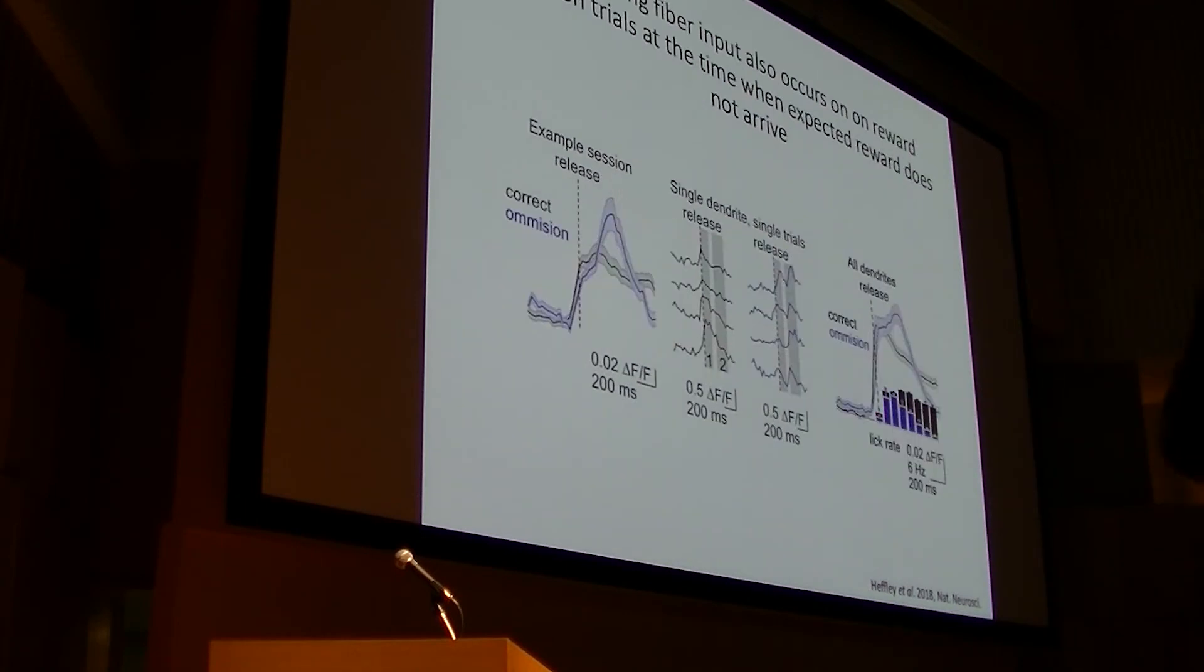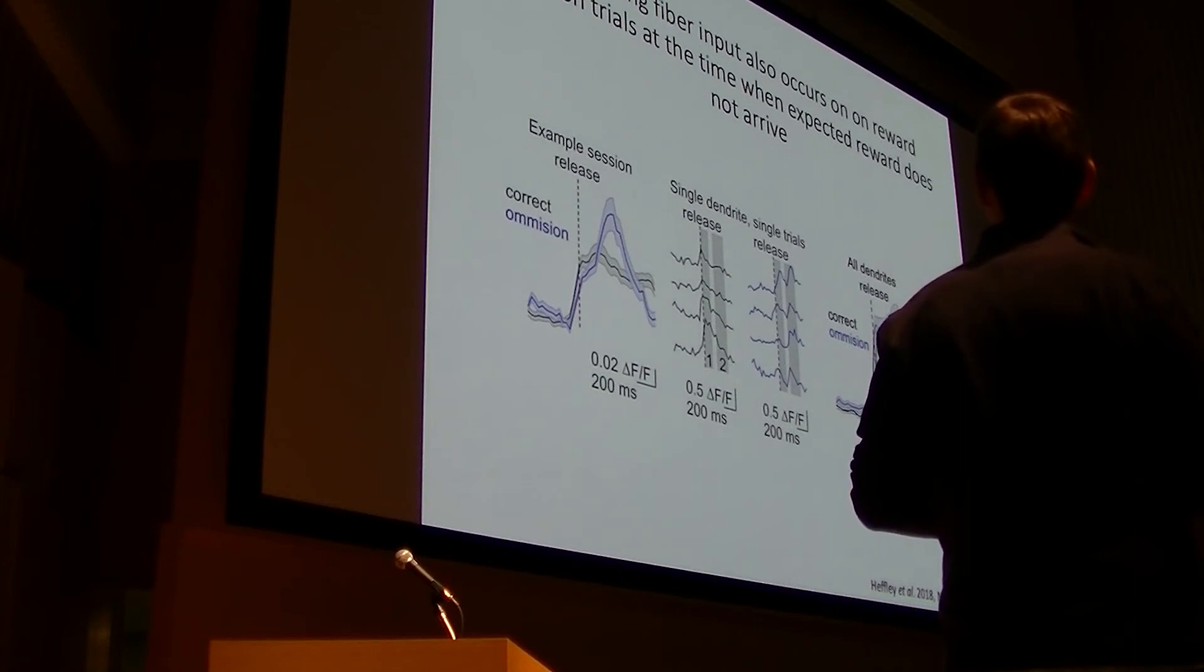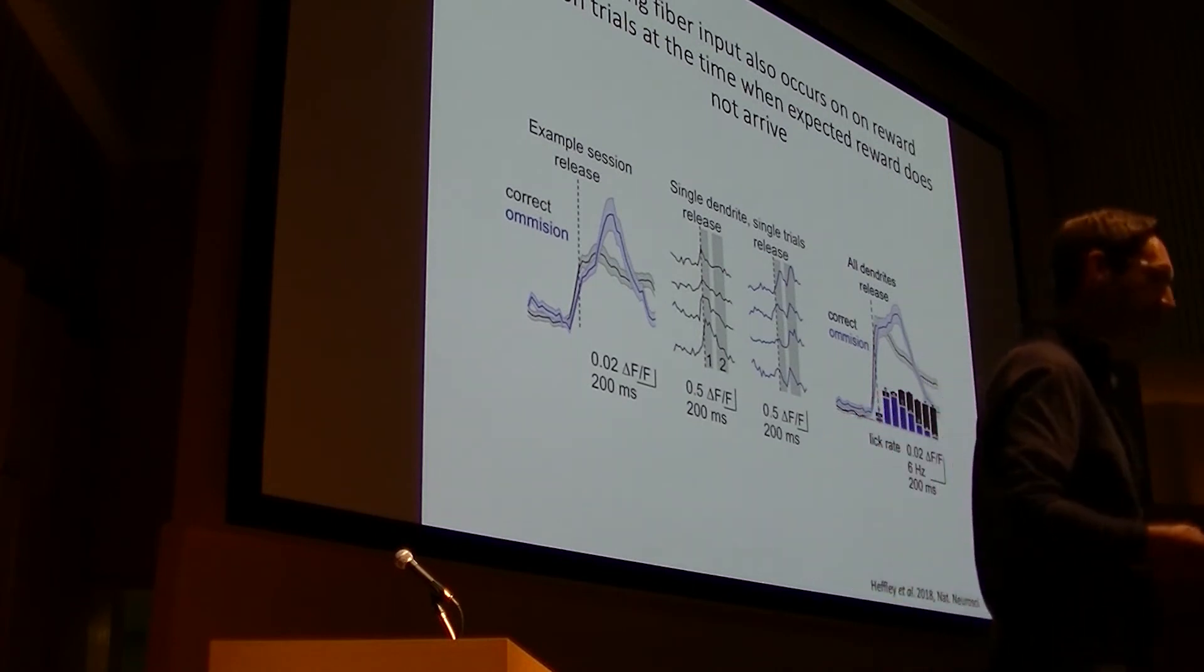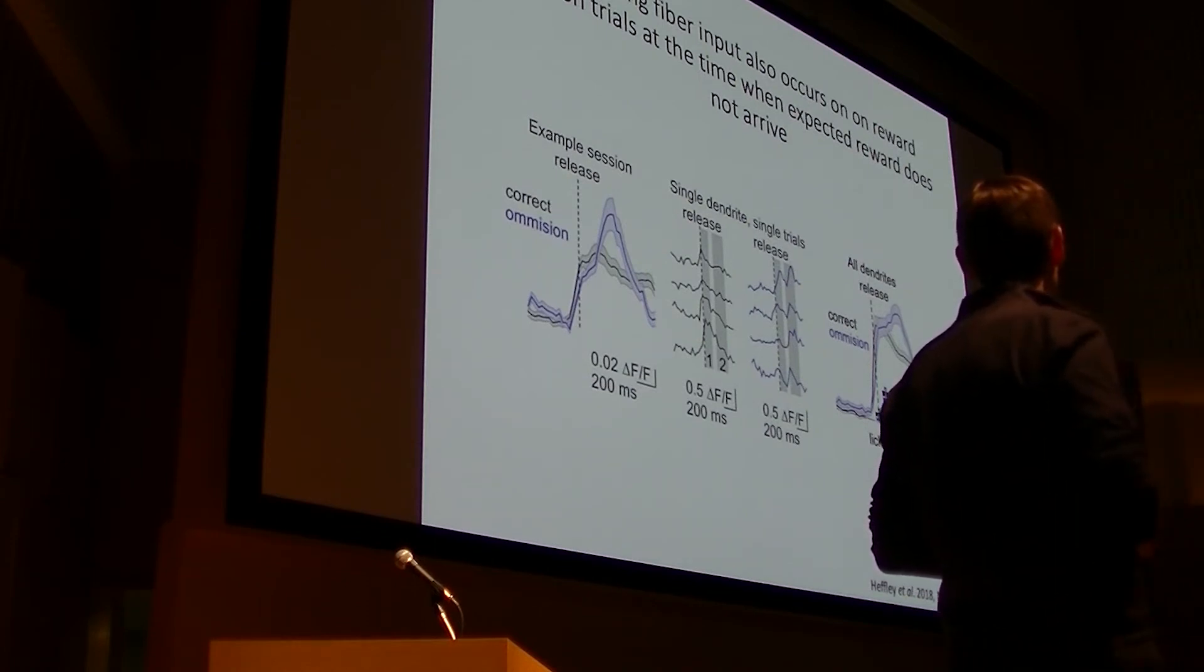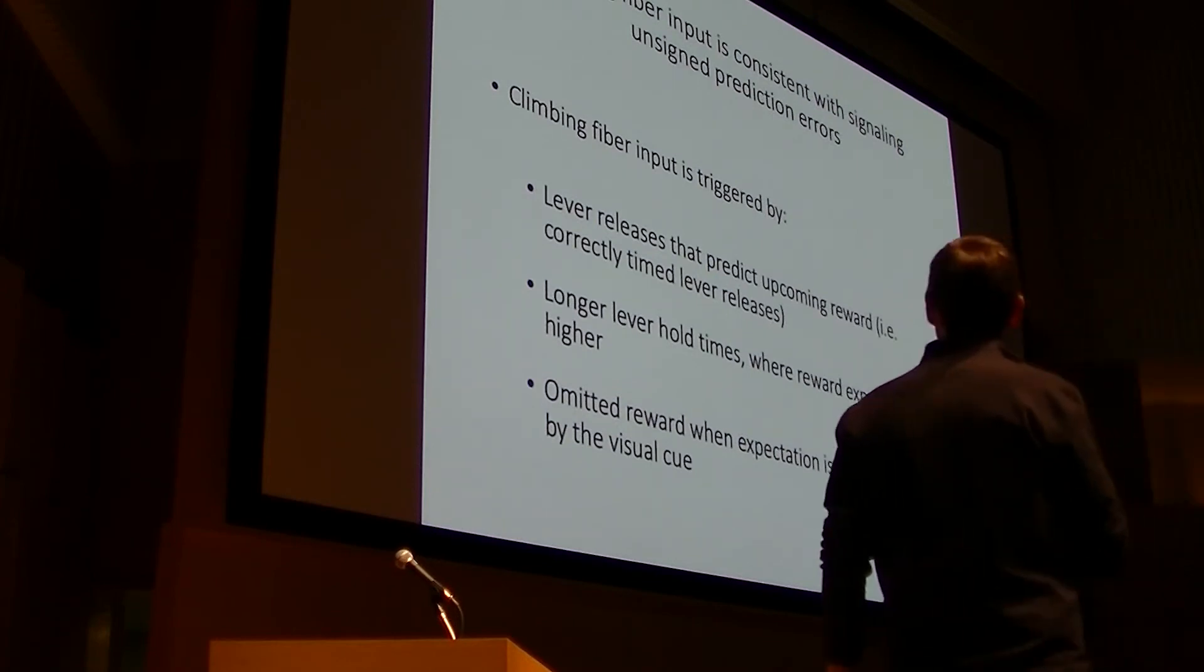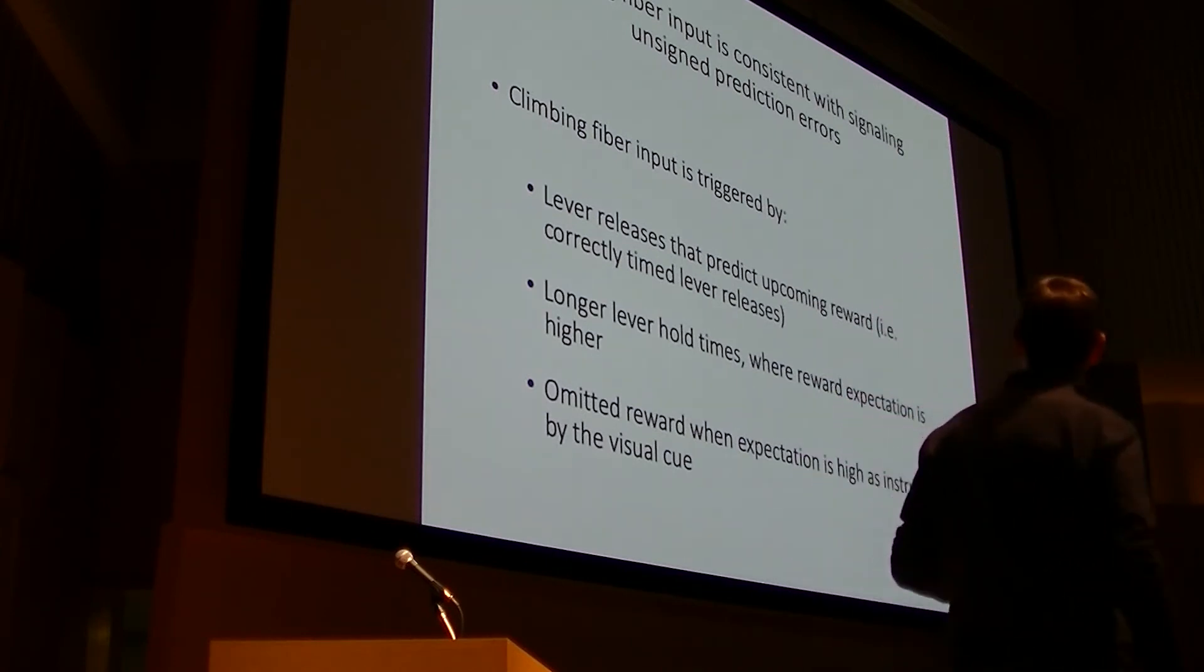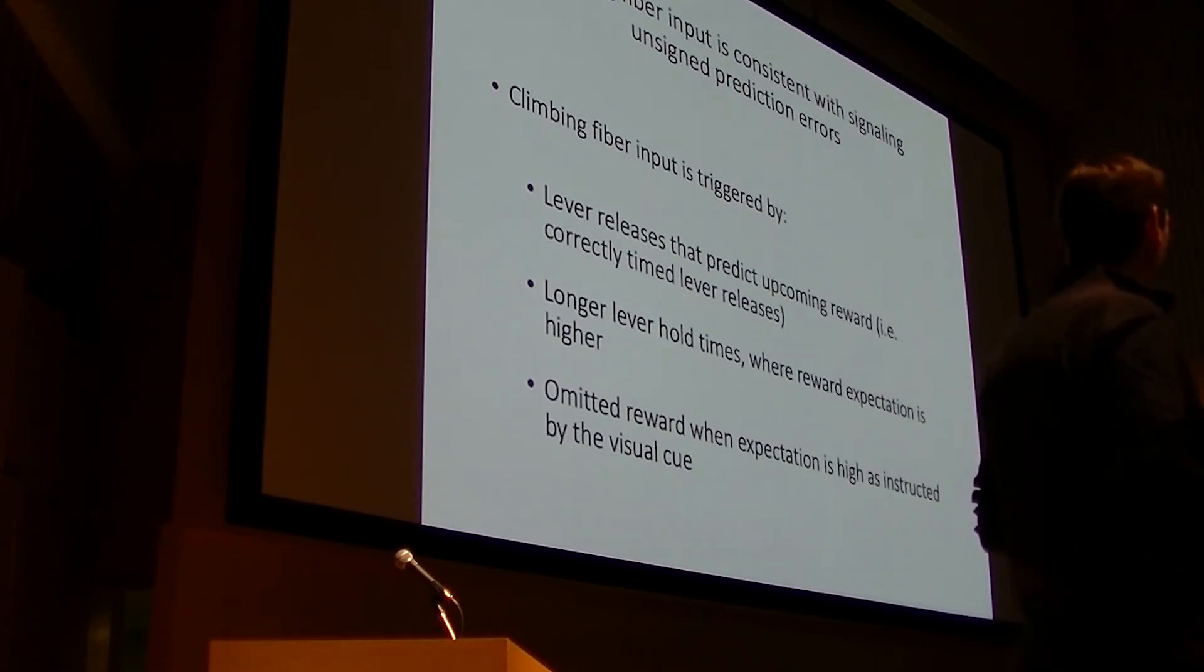To further test this hypothesis, we designed a second experiment in which we omitted reward in a subset of trials where it should have been given because the animals correctly released the lever in response to the visual cue. And I was shocked when I saw this, but in fact, we see exactly the same thing, which is this late phase of a response that's evident even on single trials. It occurs at the moment when lick rates go down. So to us, these data are most consistent with an interpretation that what we're seeing is some form of reward prediction signal. And I say that because, along with other pieces of evidence I don't have time to show you, we're seeing climbing fiber activity that is triggered by lever releases that predict upcoming reward. These would be correctly timed movements. They're consistent with longer lever hold times where reward expectation is necessarily higher given our trial structure, and it's triggered by omitted reward where expectation is high as instructed by the visual cue.